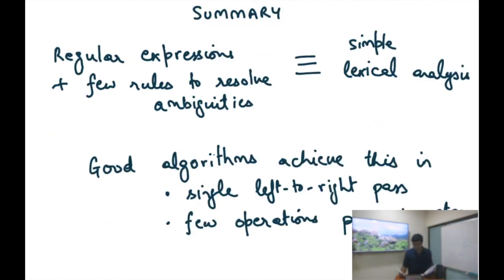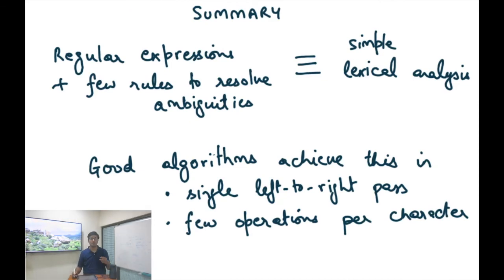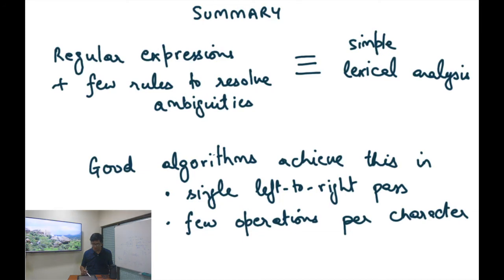We now have some idea of lexical analysis and how it may proceed. There are still missing pieces, like how to check whether a string belongs to a regular language — we'll discuss that next time. To summarize, regular expressions plus a few rules to resolve ambiguities (maximal munch and priority) provide a way to do simple lexical analysis. Good algorithms can achieve this in a single left-to-right pass, requiring only a few operations per character.